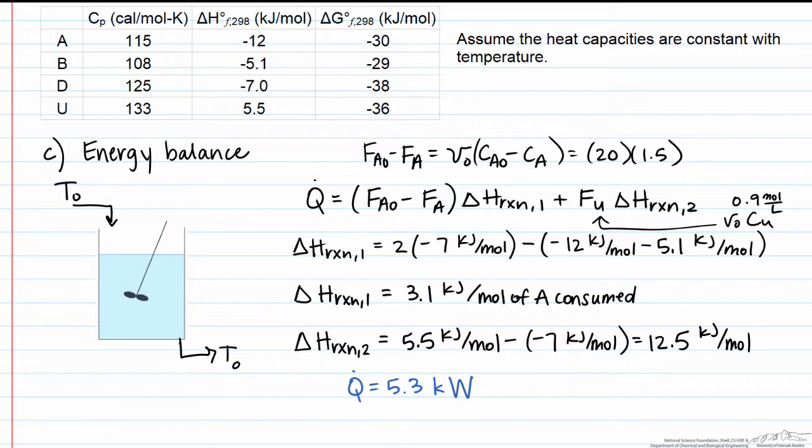I find that Q dot is equal to 5.3 kilowatts. To get the units of kilowatts, I had to convert minutes. The volumetric flow rate is given in terms of units of per minute. I had to convert that to per second, which allowed me to get kilojoules per second.